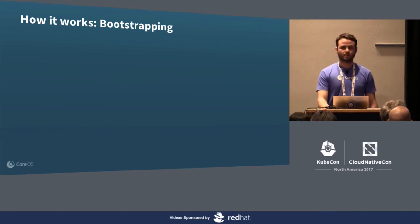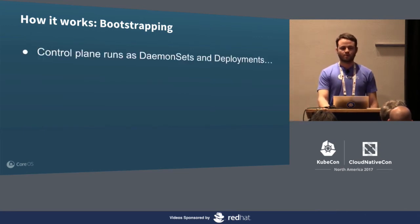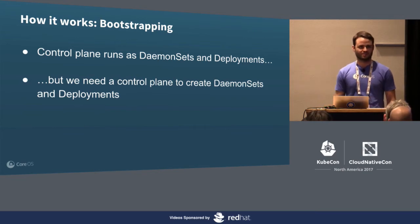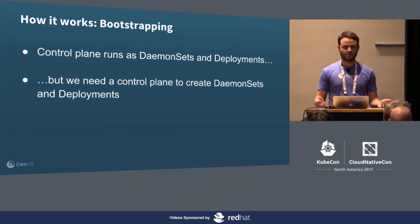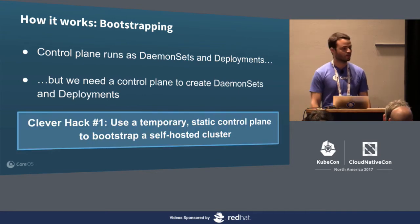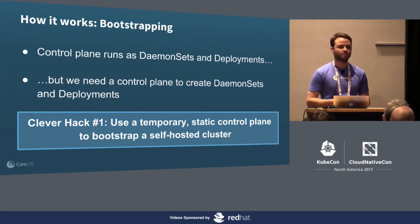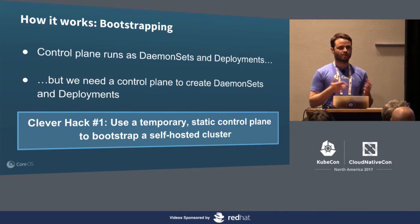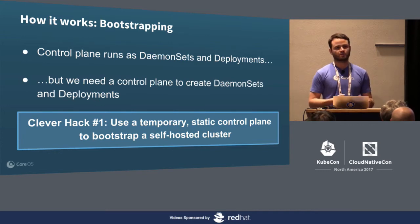The first step is bootstrapping — how do you actually create a cluster from scratch? The control plane is running as daemon sets and deployments, but you need a control plane to create daemon sets and deployments. How can you say kubectl create if there's no API server to talk to? So here we have clever hack number one: we're going to create a temporary static control plane to bootstrap a self-hosted cluster. We'll have a special ephemeral control plane that we can stand up, point at our etcd instance, create our assets, and then tear down.